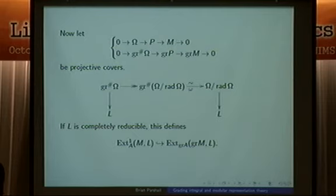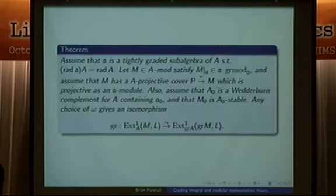So you get a diagram like this. And that gives you, when L is completely reducible, you need to get a map. In fact, it's a containment of Ext 1 of ML into Ext 1 of GR A, GR ML. So this is the ungraded Ext. L is completely reducible. It's a very special case.